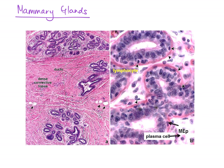Going through some other images of mammary tissue: on the left we have a low magnification image, and on the right we have a high magnification image of the lactiferous duct. The cells that line a lactiferous duct are either cuboidal or columnar in shape, as with most glands.